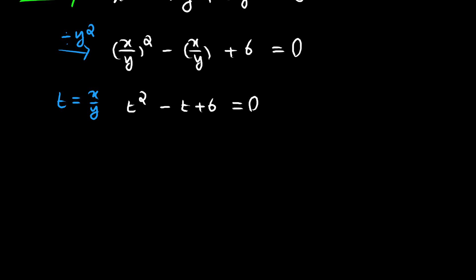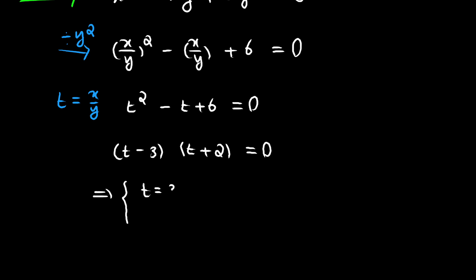At this point we can use the quadratic formula or factoring to solve for t. We can factor this as (t minus 3)(t plus 2) equals 0, and solving gives us t equals 3 or t equals negative 2.